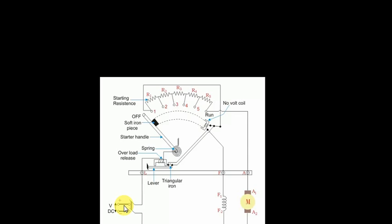Let me tell you briefly about the different components of a 3-point starter. First of all, there is an overload release coil. There is a soft iron handle which is connected with a spring balance system. These points marked as 1, 2, 3, 4, 5 are called studs which are also metallic in nature. And the resistance, as it is mentioned here, starting resistance.